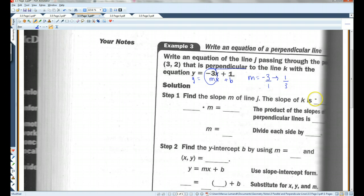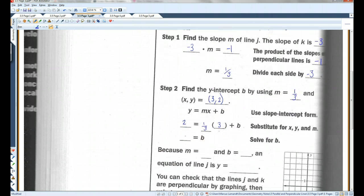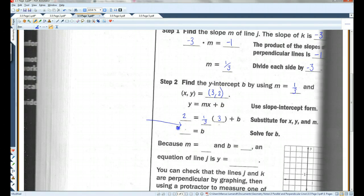Alright. So, the slope of k is negative 3. Negative 3 plus whatever our slope is has to be negative 1. So, m has to be 1 over 3. Once again, I like this method better, but the book, for some reason, likes to use this method. The product of the slopes of perpendicular lines is negative 1. So, I divided each side by negative 3. Alright. We're going to find the y-intercept b by using m equals 1 third. And x, y. We're giving our x, y here. Y is, let's see here, 2. M is 1 third. X is 3. I substituted for x, y, and m. Once again, they don't really give you much room, so I'm going to add a step over here. We have 2 equals 1 third of 3 is 1 minus 1 from both sides. b equals 1.